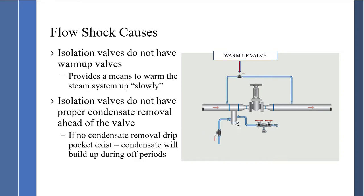Good practice also includes installing a drip pocket ahead of any valve that is shut — whether a control valve or isolation valve. This steam trap station removes condensate that can accumulate when a valve is closed for eight to ten hours. The last thing you want is to open the valve and allow a slug of condensate to flow into the steam line. Two key measures for flow shock prevention: always have a warm-up valve around the isolation valve, and include a steam trap station ahead of it.